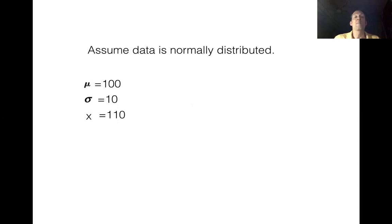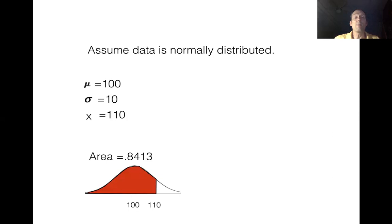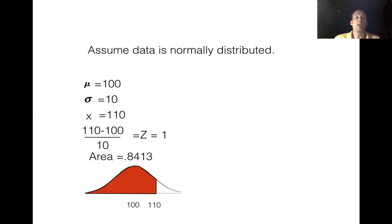With mu = 100, sigma = 10, and x = 110, we sketch a curve with 100 at center and 110 to the right, shading all area to the left of 110. The area turns out to be 0.8413, or 84.13%. Running the z score tells us x = 110 is exactly one standard deviation above the mean.